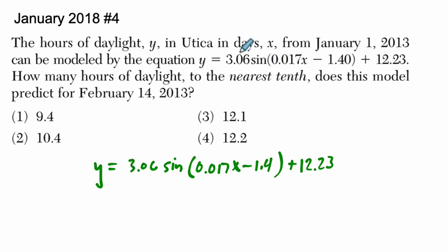So x is the number of days, and y is the amount of daylight. So we want to find the hours of daylight based on the number of days from January 1st. So there are 31 days in January, and to get to the 14th day of February, we are looking at 31 plus 14, which of course is 45 days.